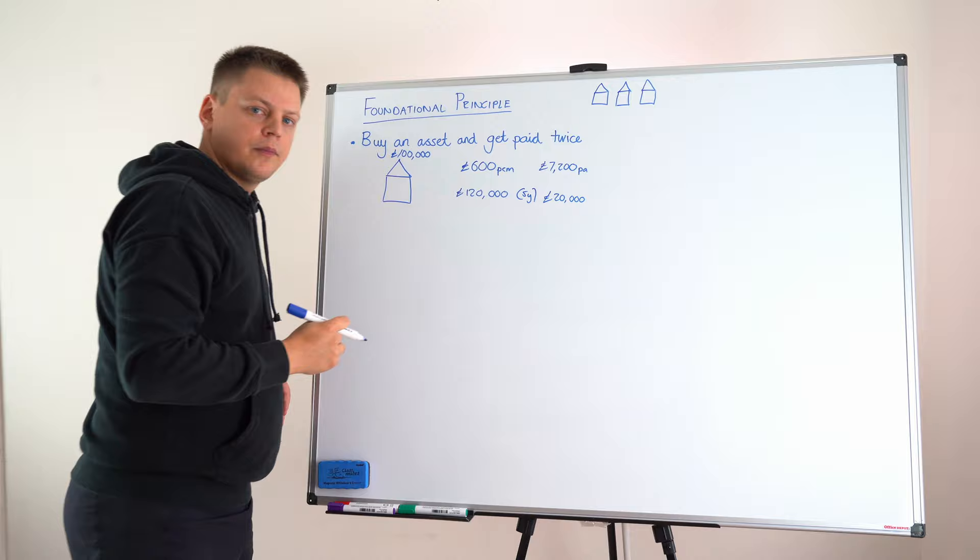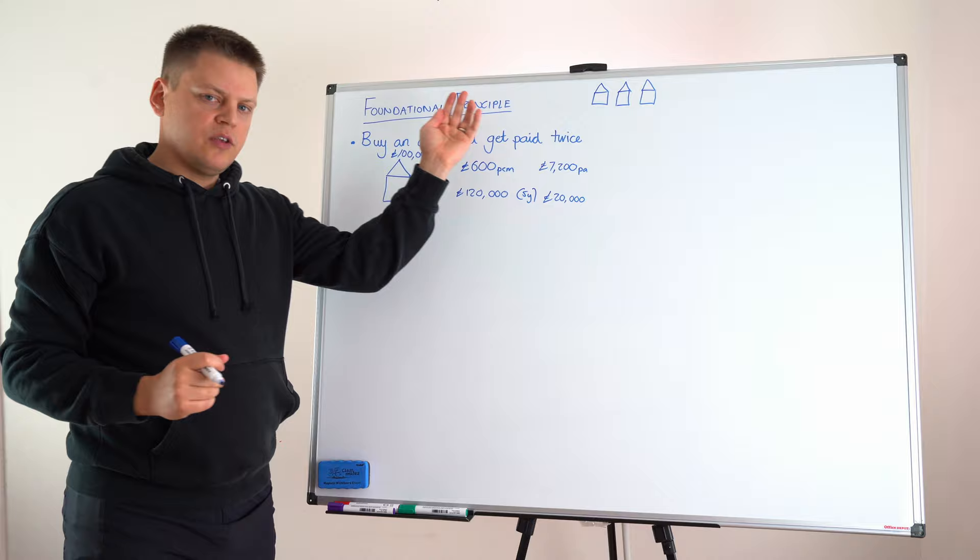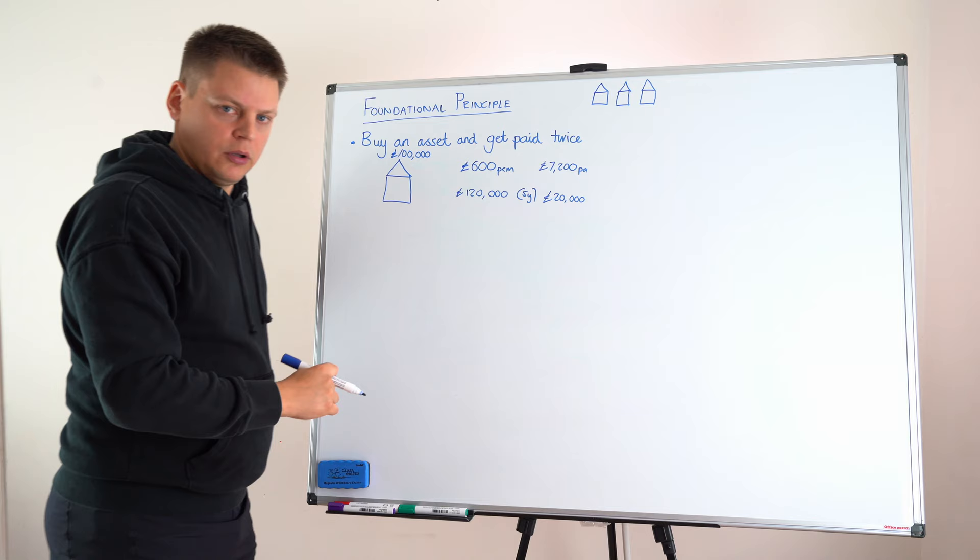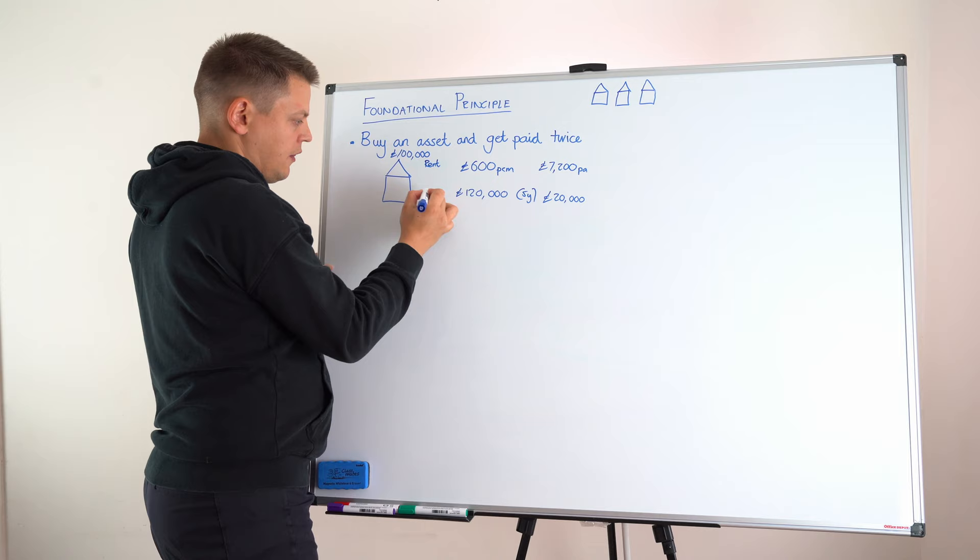So, let's just come back to this idea, this very foundational principle, buy an asset and get paid twice. You can buy a house, for our example, £100,000, and you can get paid rental income, and you can get paid in capital appreciation. This is rent, and this is capital appreciation.